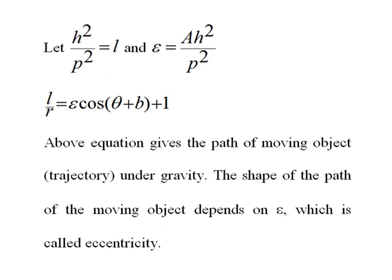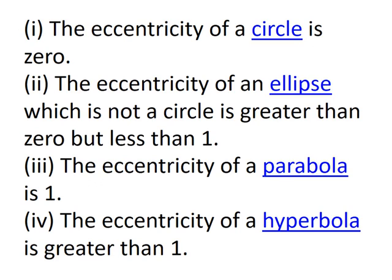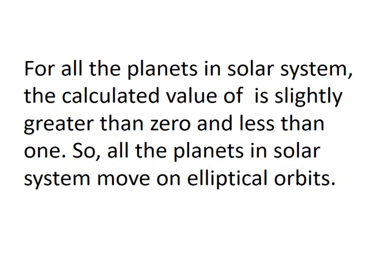We rewrite the final equation in terms of two new constants L and epsilon, giving L/r equals epsilon·cos(theta + B) + 1. This equation describes the path of the planet, and its shape depends on epsilon, which is called eccentricity. For a circle, eccentricity is 0; for an ellipse, it is between 0 and 1; for a parabola it equals 1; and for a hyperbola it is greater than 1. For all planets, eccentricity is slightly greater than 0 and less than 1, so all planets in the solar system move on elliptical orbits.